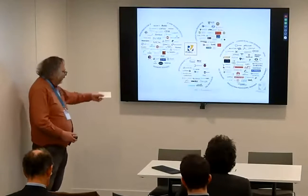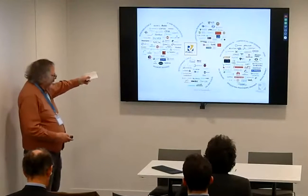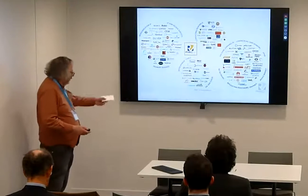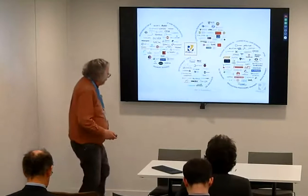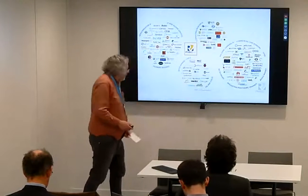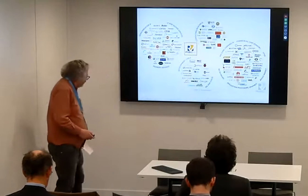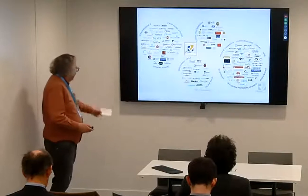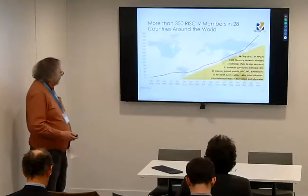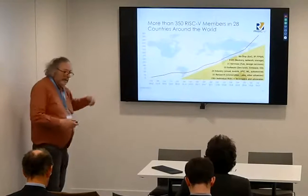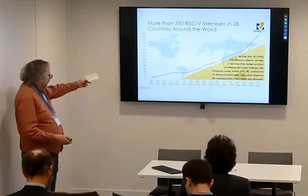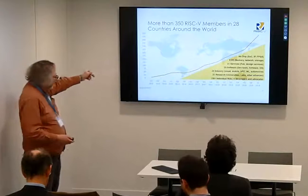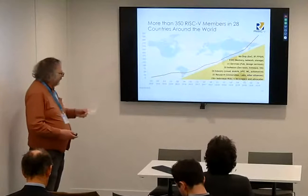Who's using RISC-V? You can see all the logos on the slide, though I guarantee that list is already out of date. There are lots of big companies involved, including some British ones like Raspberry Pi, as well as Mentor Graphics and many other big names. Going back to membership, there are more than 350 members — and that number is going up and up. Almost every major country in the world now has some organisation involved in RISC-V.